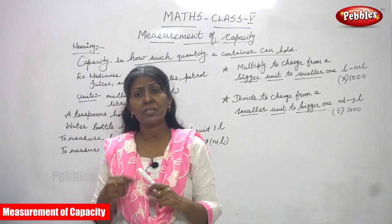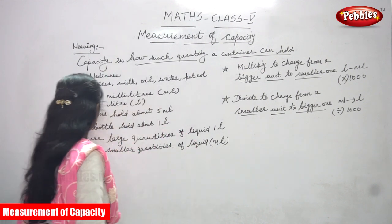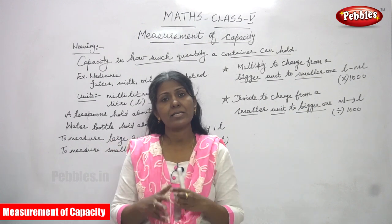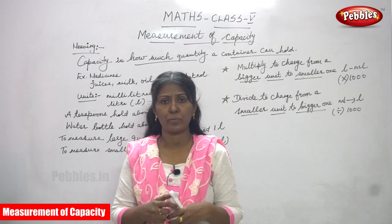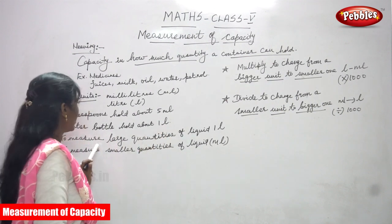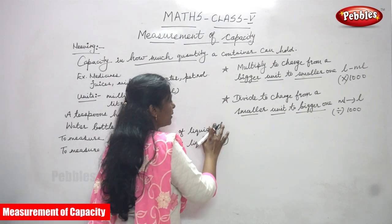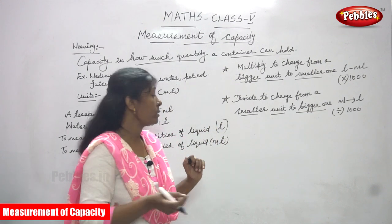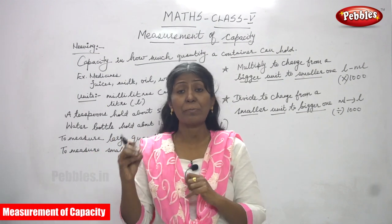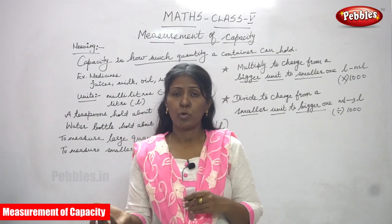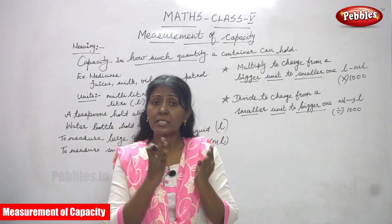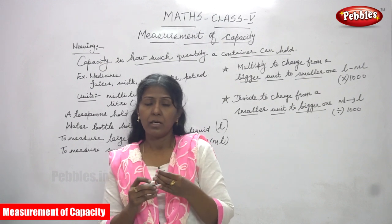A tablespoon holds about 10 ml. A water bottle holds one liter — you can get one-liter or two-liter water bottles, and you can also store juice in them. To measure large quantities of liquid, we use liters — one liter, two liters, five liters, and so on. Small quantities of liquid are measured in milliliters, and large quantities of liquid are measured in liters.